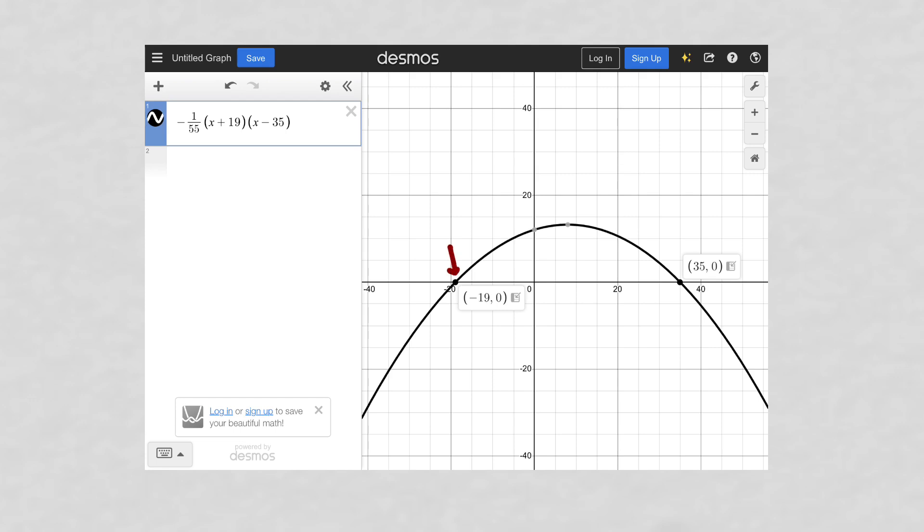Where are the x-intercepts? And I found that it occurs at negative 19 for x value, and also a positive 35.